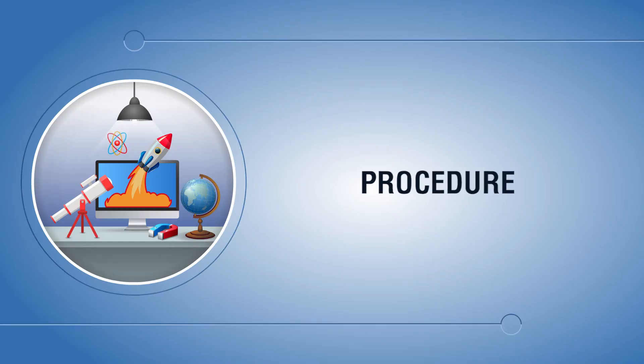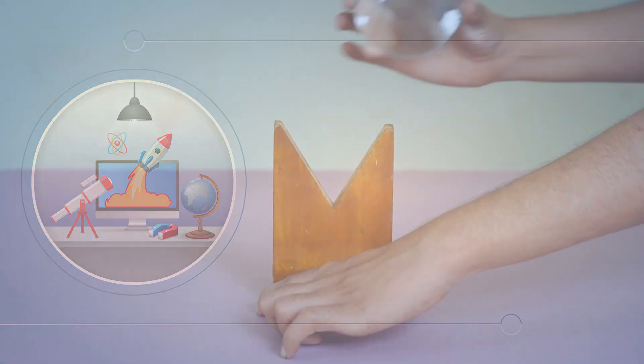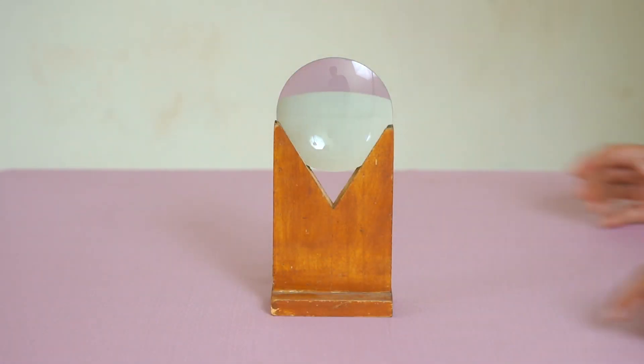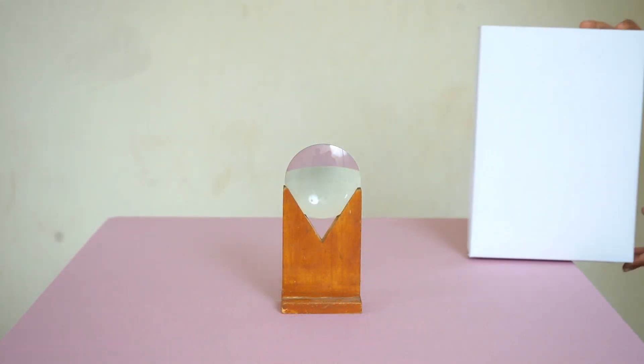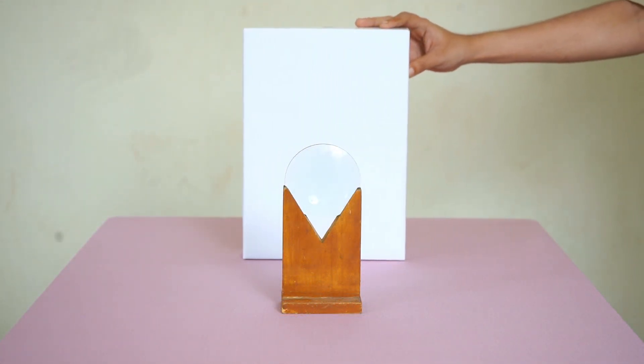Procedure: Place the convex lens vertically on a lens holder kept on a table. Place a screen fixed on a stand on the other side of the lens.